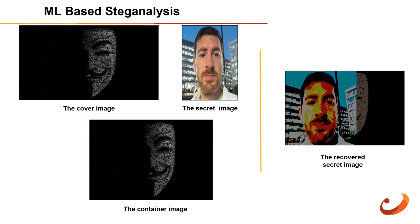Machine learning-based steganalysis: one of the main techniques in steganography is hiding messages in images by altering the LSB (least significant bit) of the pixels — altering the LSB of the pixel with those of the message bits. The result is an image with a hidden message that the human eye cannot distinguish from the original image. An ML model can be trained to test the presence of LSB steganography.